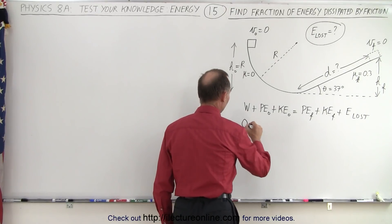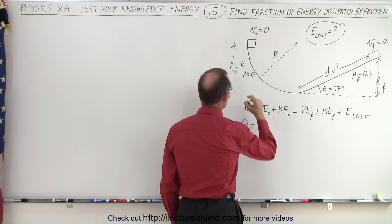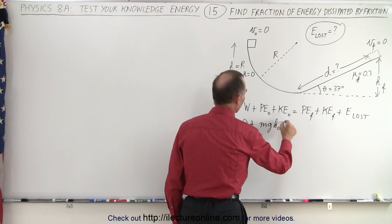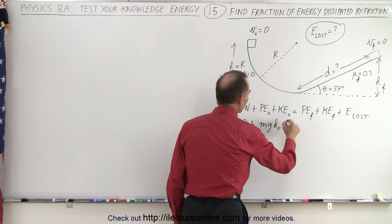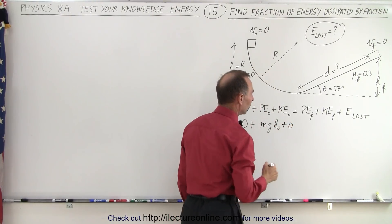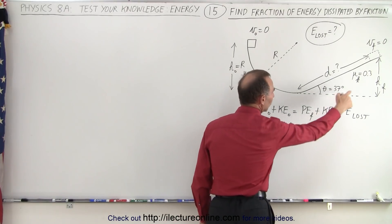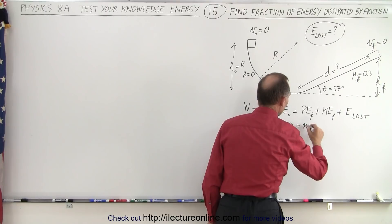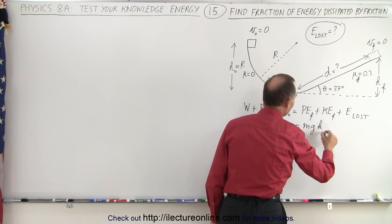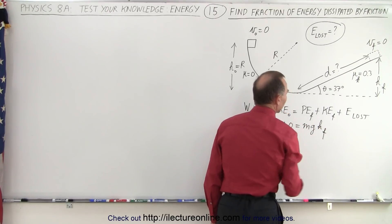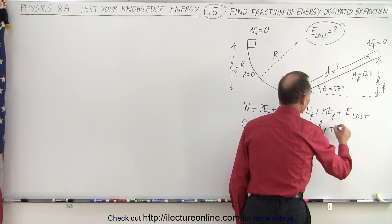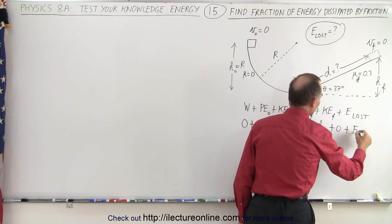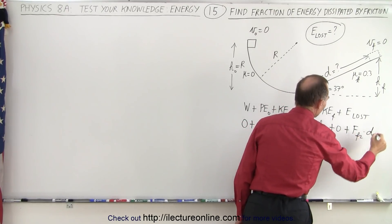Putting in what we have: zero work is put into the system. The original potential energy is mgh_initial. There's no motion initially, so the initial velocity is zero. The final potential energy is mg times h_final. The final kinetic energy is zero, and the energy loss is going to be the friction force times the distance.